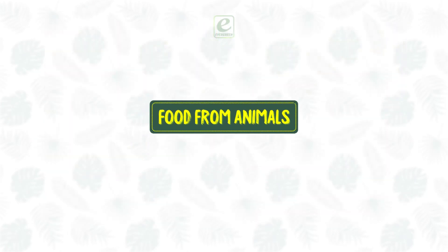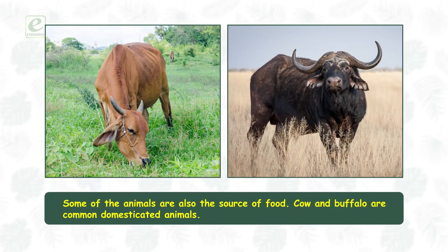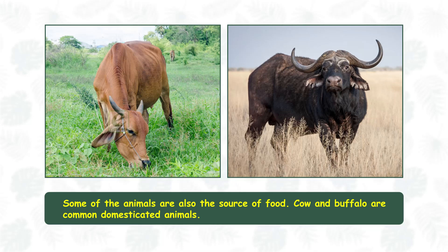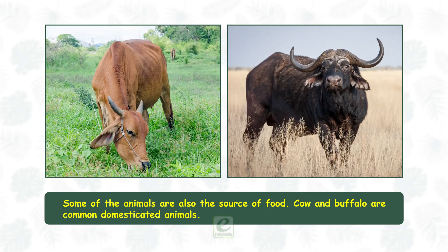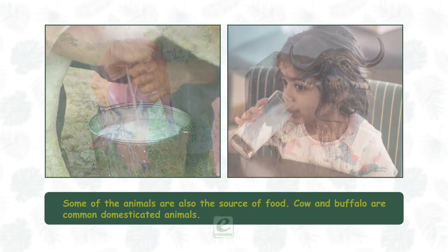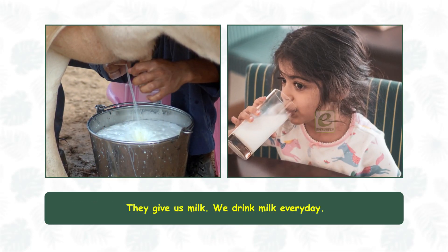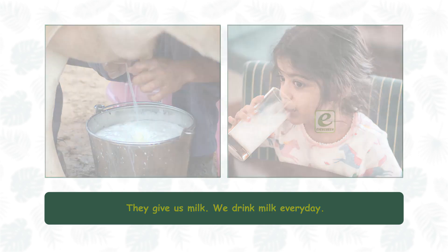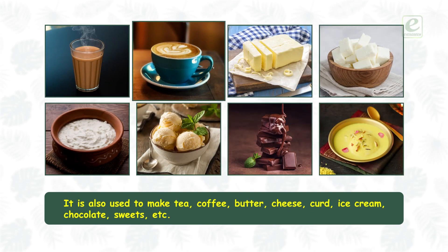Food from animals. Some animals are also a source of food. Cow and buffalo are common domesticated animals. They give us milk, which we drink every day. Milk is also used to make tea, coffee, and more.